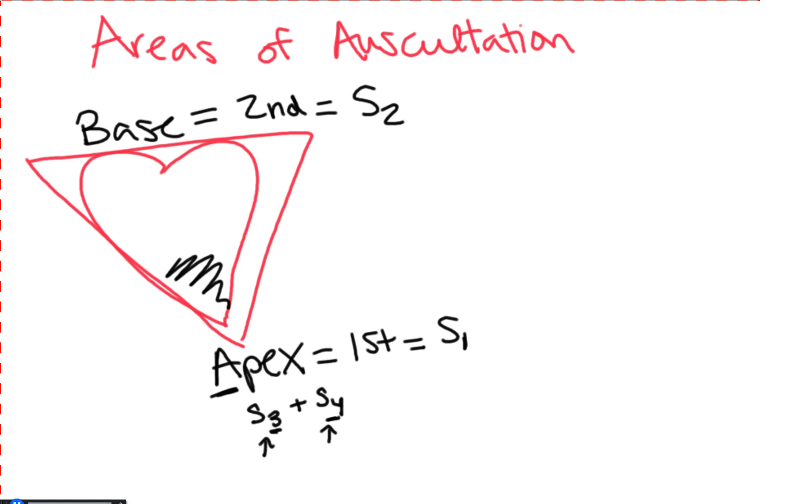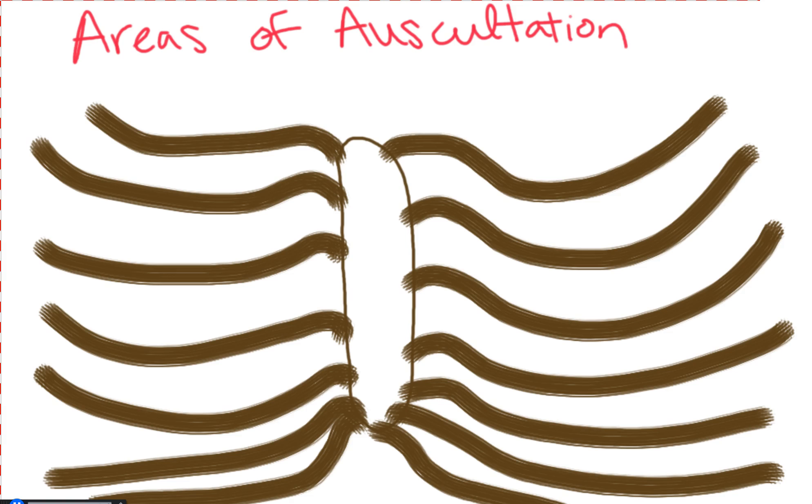Now let's talk about where on the ribcage you should listen for these heart sounds and which valves are best represented by different areas. The mnemonic I learned in nursing school is APE TO MAN. A stands for aortic, P for pulmonic, E for Erb's point—where you can equally hear S1 and S2. T is tricuspid, and M is mitral.